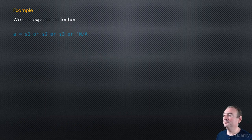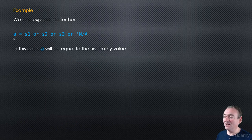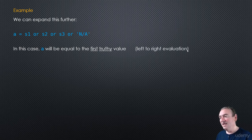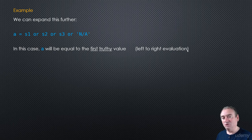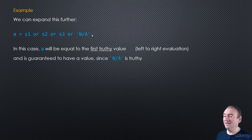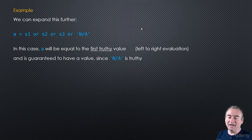We can expand this further: a = s1 or s2 or s3 or 'N/A'. This means a will equal the first truthy value. Python evaluates these from left to right since they have equal precedence, so it grabs the first truthy value. Since the last one is always truthy, a is guaranteed to be at least 'N/A', or the first non-empty string among s1, s2, or s3.